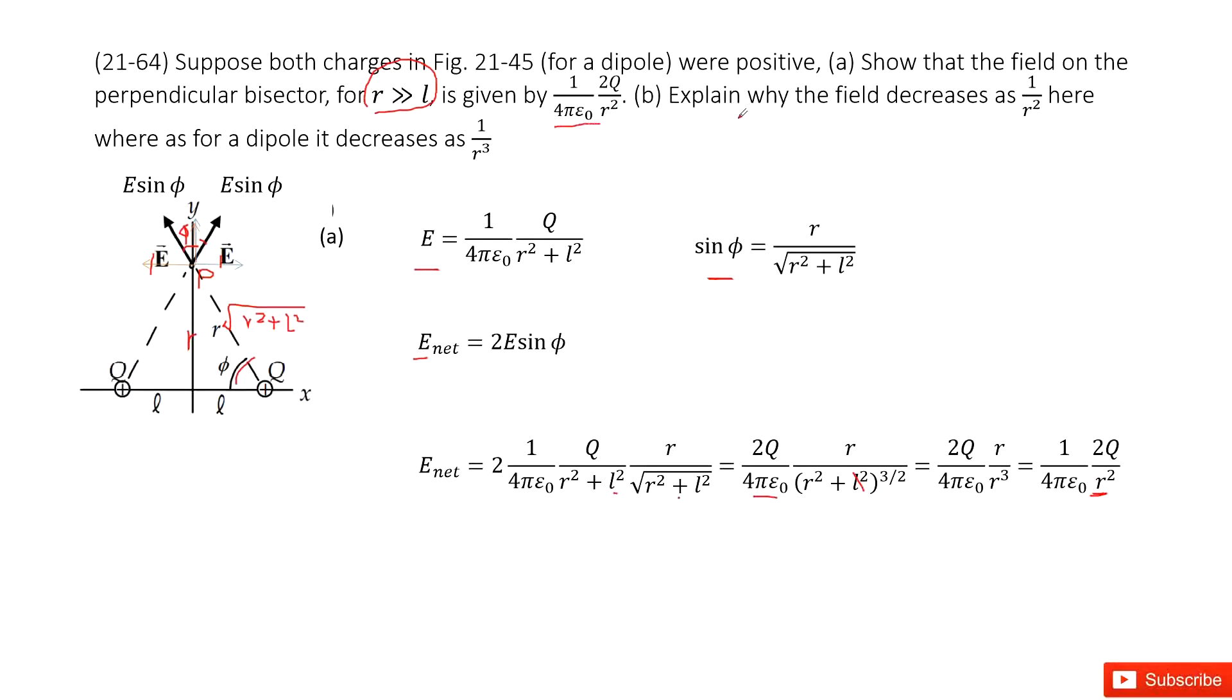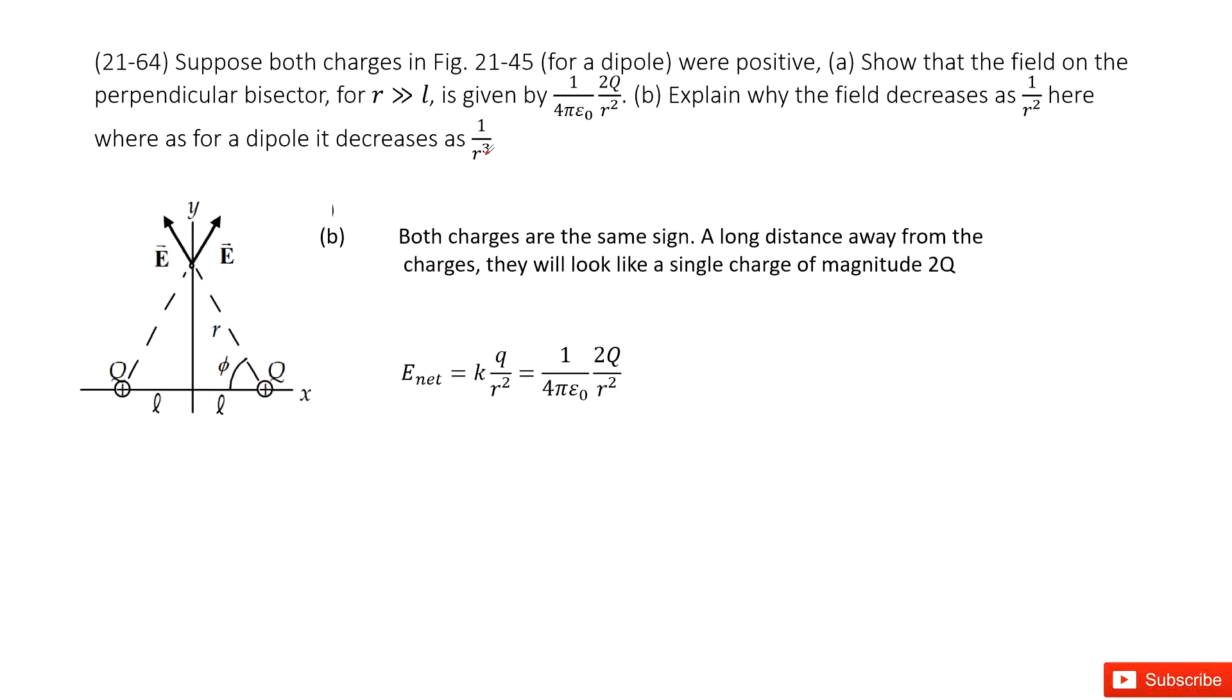The next part explains why the field decreases as 1 over R squared here, whereas for a dipole it decreases as 1 over R cubed. How can we explain that? We look at the keyword: R is much larger than L, so this R is much larger than L.